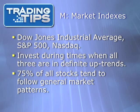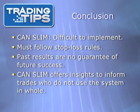Finally, M stands for Market Indexes — namely the Dow, the S&P 500, and the NASDAQ. The CAN SLIM system advises investing during times of definite uptrends for all three indexes, as 75% of stocks tend to follow a general market pattern.